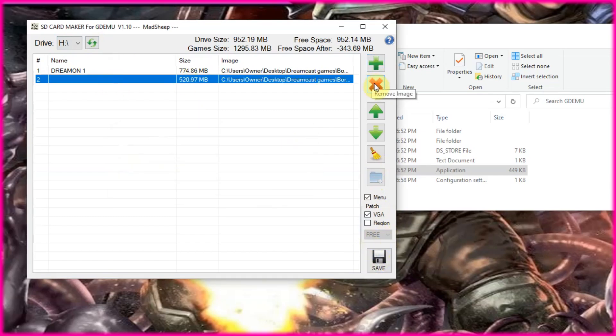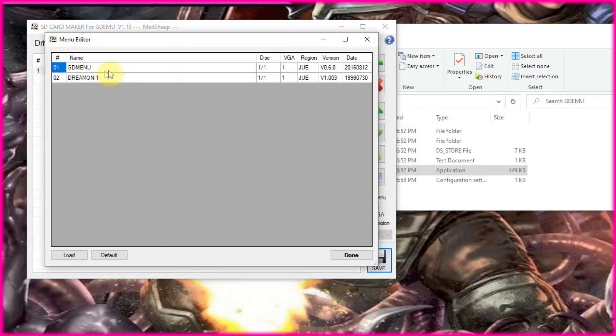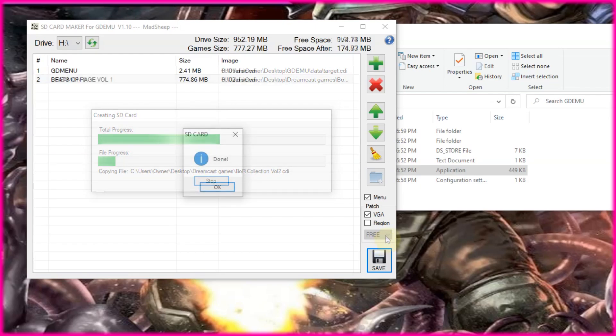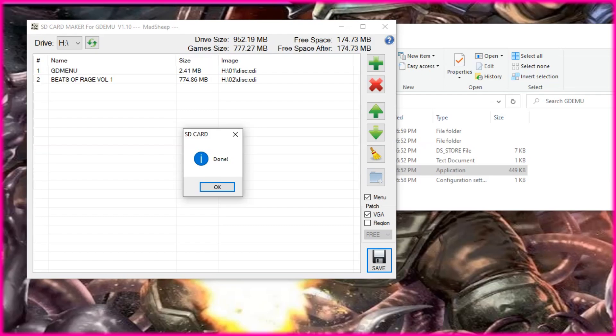And then basically you're selecting that you want a menu. Patch VGA. So it can make certain games that are not normally VGA compatible compatible. Which is always a good thing. And the last one is make the games region free. And when you save it you can rename them. Which I suggest because when you actually load them up on the GDMU. The only thing you'll see is the titles of them. So make sure they're accurate.